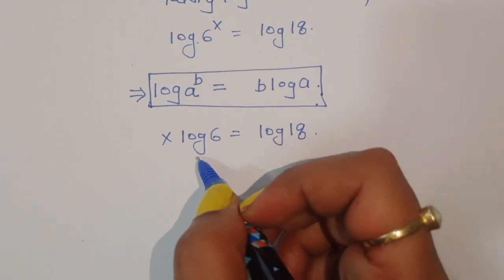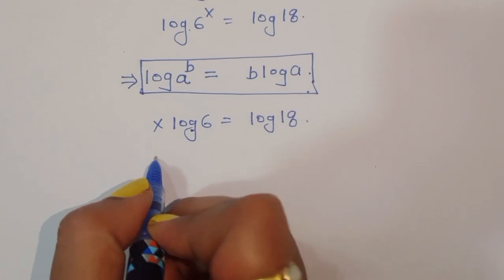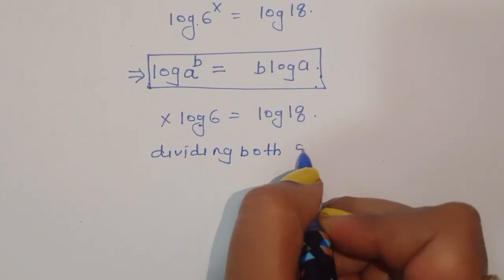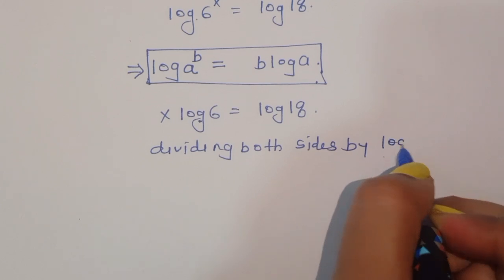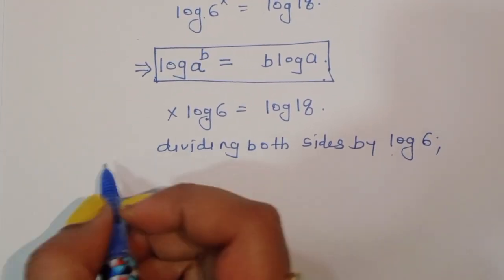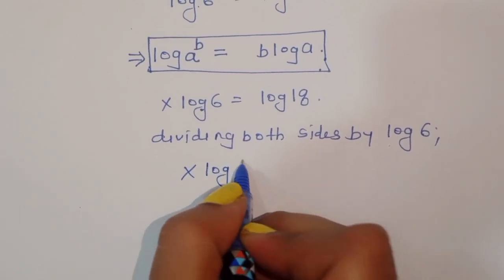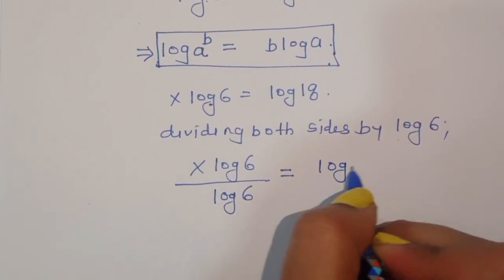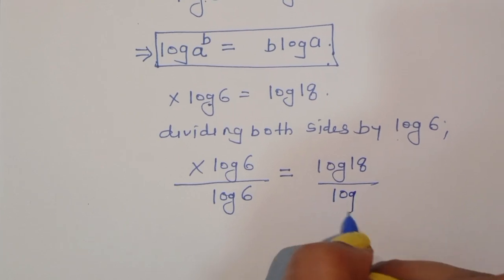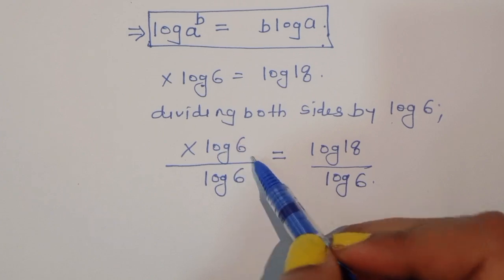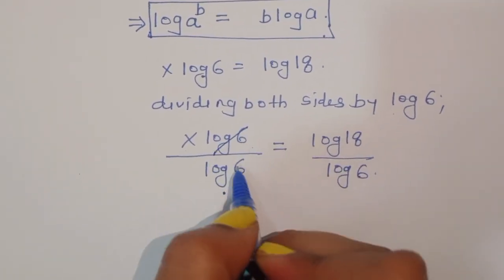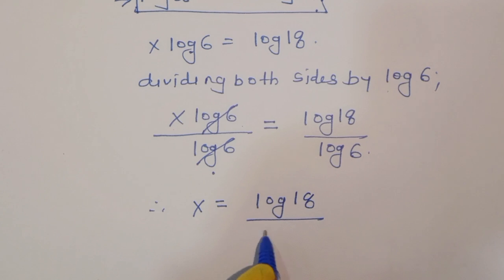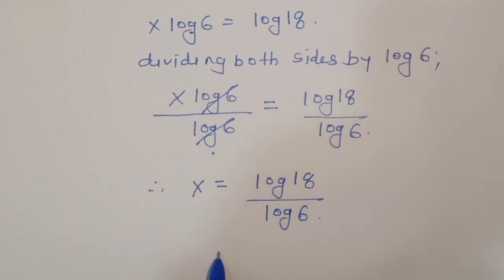Now we divide both sides by log 6. On the left side, log 6 divided by log 6 cancels out, so we get x is equal to log of 18 divided by log of 6.